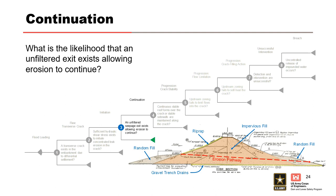Node 3: What is the likelihood that an unfiltered exit exists allowing erosion to continue? As shown in the embankment cross section, there was no chimney or downstream filter in the original embankment design. The random fill berms where the leakage exits were located were comprised primarily of shale and sandstone, which did not provide any filtering action. Therefore, there was an unfiltered exit at the time of the internal erosion incident.